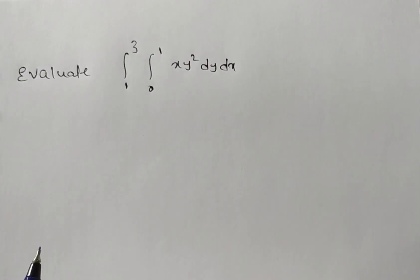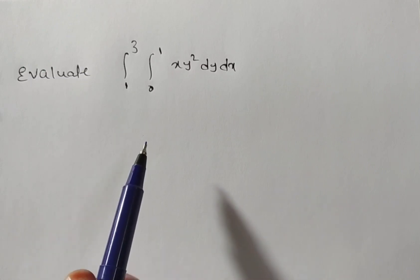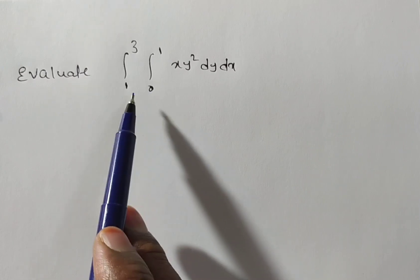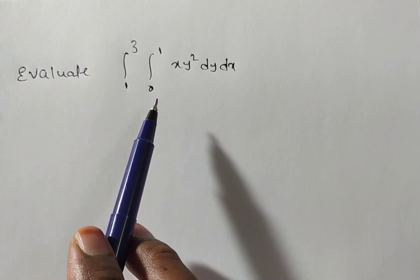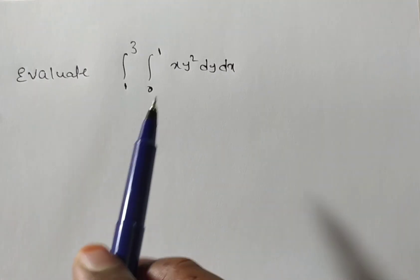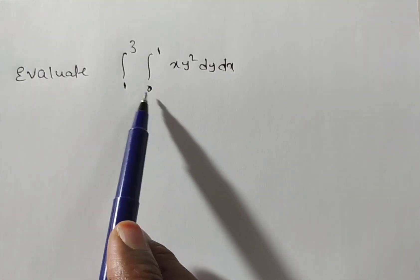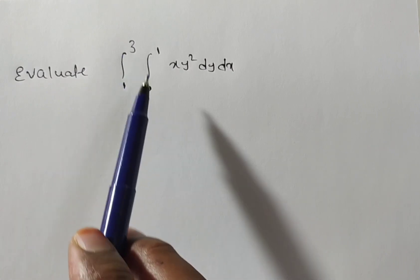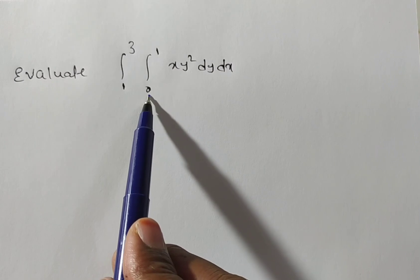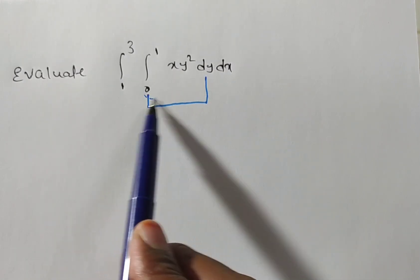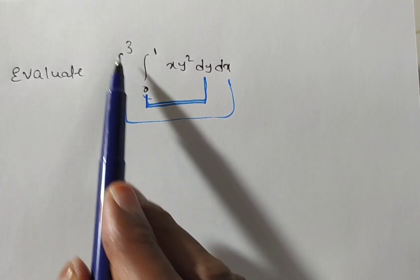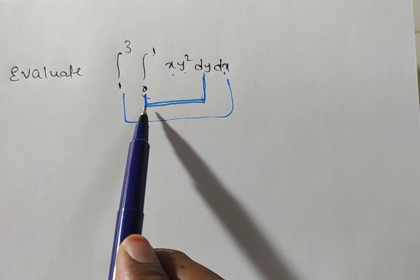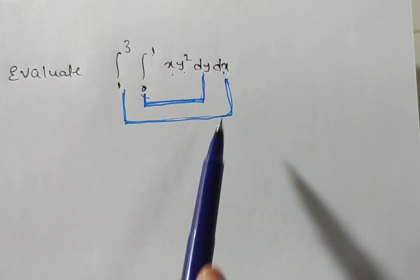First we have to determine whether to integrate with respect to x or y. Observe the limits of x and y — both are independent in this case. Whenever the limits are independent, we can integrate in either order. Now, are the x and y limits explicitly labeled? No. The inner integral has dy, so y limits are 0 to 1, and the outer integral limits 1 to 3 are the x limits.